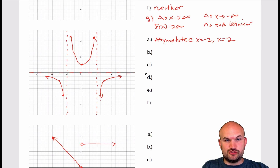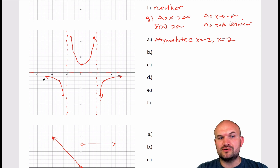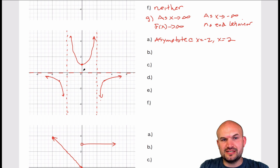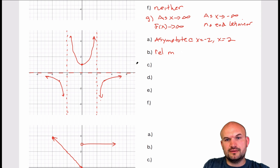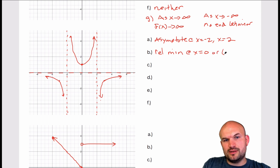For part B, the extrema: there is a relative min here. There's no absolute max or absolute min. Even though the graph looks like it has a relative value near zero, those aren't coordinate points, and for a relative extrema the points to the left and right must be higher or lower — which isn't the case as we continue. The only extrema we have is the relative min at x equals zero, or at the coordinate point (0, 1).